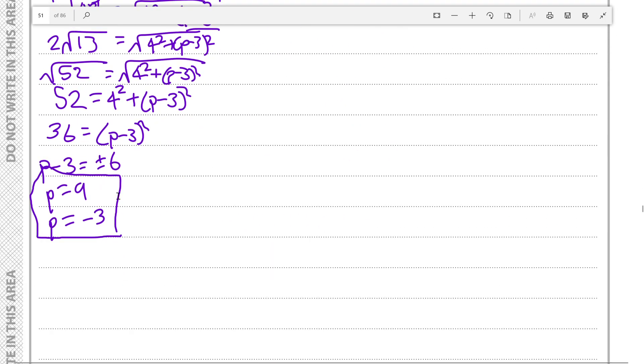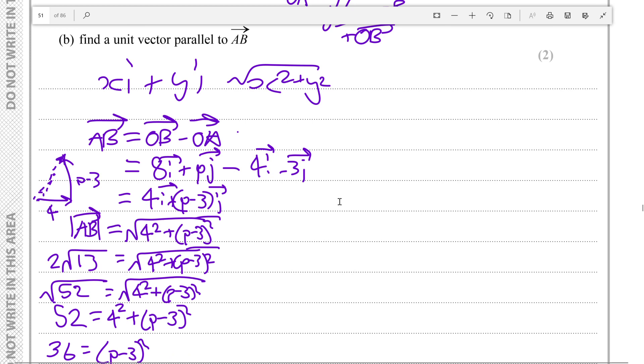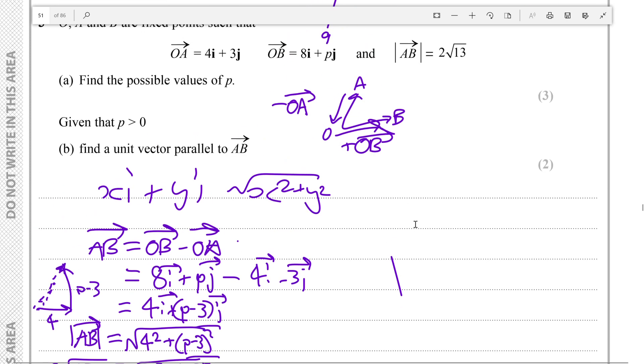Now given that p is greater than 0, so p is really 9, that's what it's telling us. Find a unit vector parallel to AB. So p is 9, and so AB is, if you remember that AB is 4i plus (p minus 3)j, so since p is 9, p minus 3 would be 6, so it's 4i plus 6j.